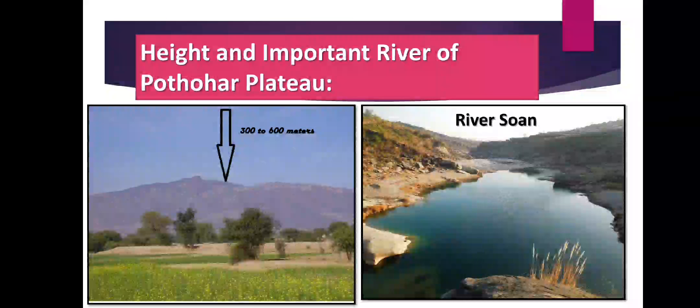The height of Potohar Plateau is 300 to 600 meters. This plateau includes the areas of Islamabad, Rawalpindi, Attock, and Jhelum. River Swan is an important river of Potohar Plateau in north Punjab. It starts near a small village called Bun in the foothills of Patriata and Murree. River Swan makes its valley here, called Swan Valley. The surface of Potohar Plateau is badly cracked.